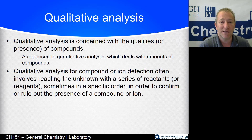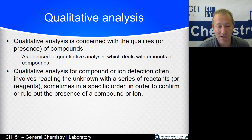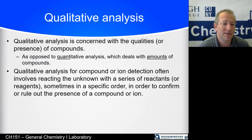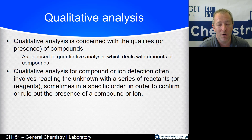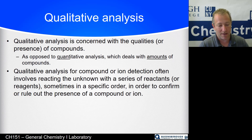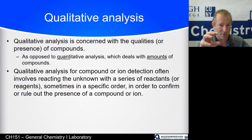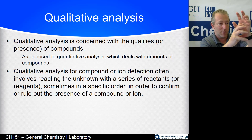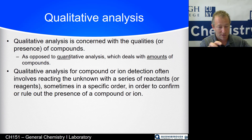Qualitative analysis is concerned with qualities over quantities. Detection of a compound or ion often involves reacting your unknown with a series of reactants or reagents, sometimes in a specific order — it's sort of like a flow chart. The old way of doing this lab was a flow chart: react with this, does it do this or that? Based on that, react with something else and see what it does, and so on, until you get down to a known identification of the compound.